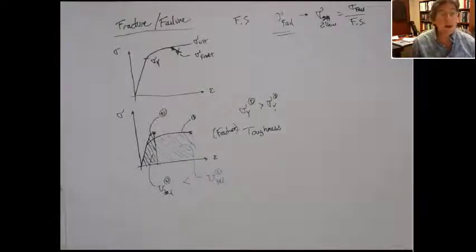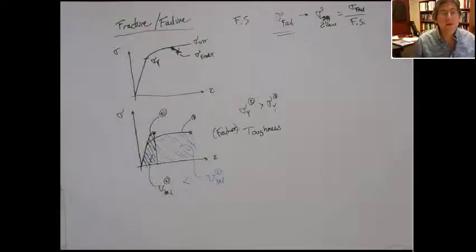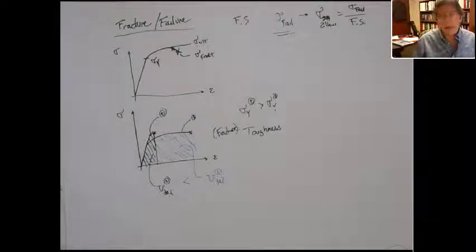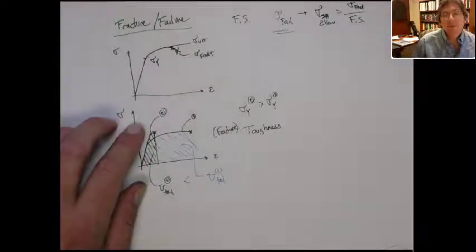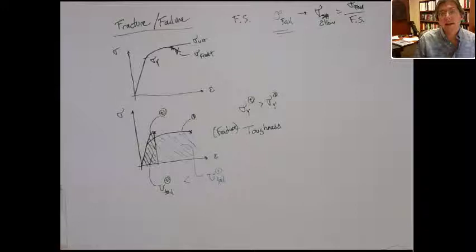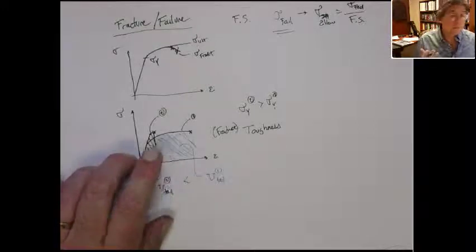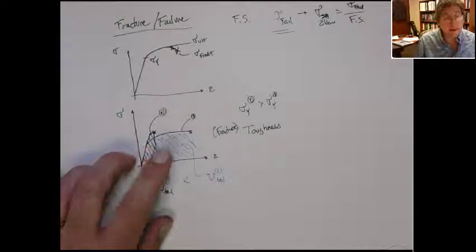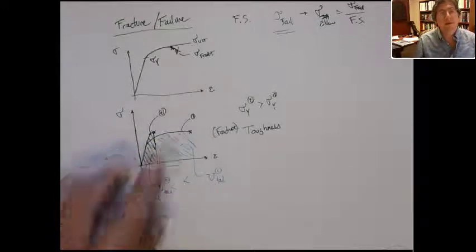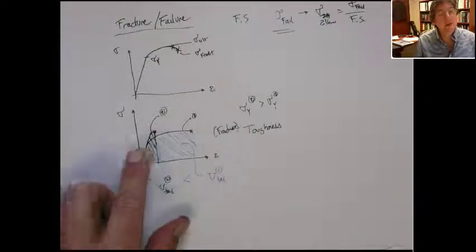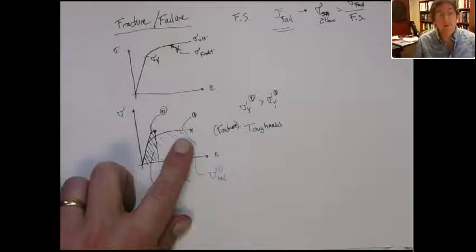So it depends upon what your design is. If you want to design something with a very high yield and it never has a chance to yield — like a cable under nice static loading — material two might be preferred. But if you're designing a hull of a ship where the loading changes a lot, where it's cracking and has to see unusual situations like localized fracture or damage due to a weapon, material one is superior. The toughness of a material is the amount of energy represented by the area under the stress-strain curve until the material fractures.